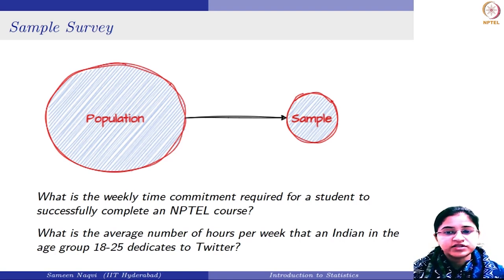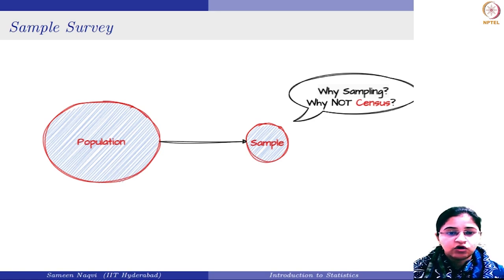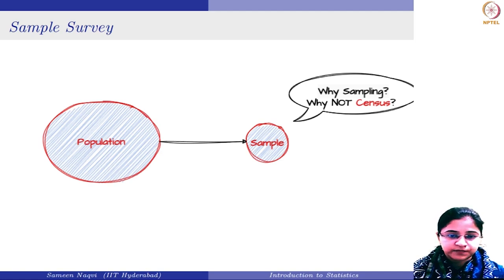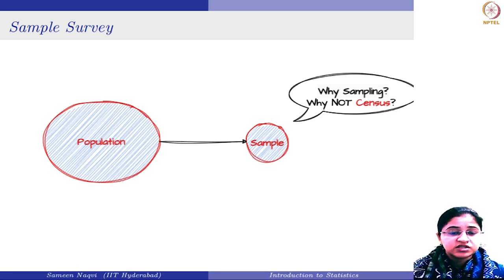Now, what is a sample? A sample is basically a subset of the population. The question is why do we need to take a subset and study that, rather than consider the entire population or conduct a census? The answer is that it is very difficult to gather information from each and every individual of the population. Populations are dynamic — they rarely stand still and change frequently over time. Additionally, collecting data from such a large group is very time consuming and very expensive, requiring a lot of funding.